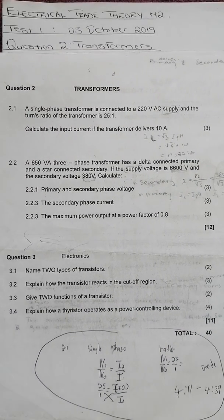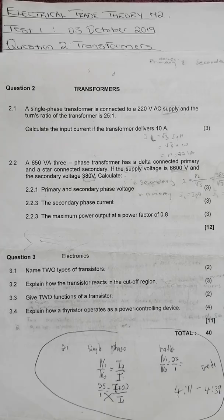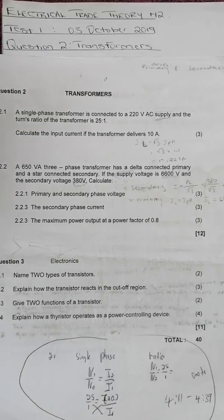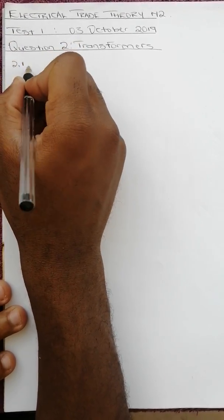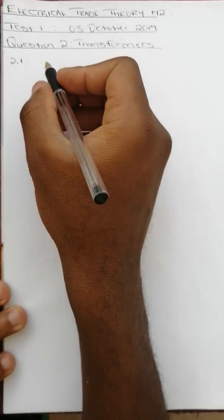Question 2.1: A single-phase transformer is connected to a 220-volt AC supply and the turns ratio of the transformer is 25 to 1. Calculate the input current if the transformer delivers 10 amps. Let's write down the data that we're given.